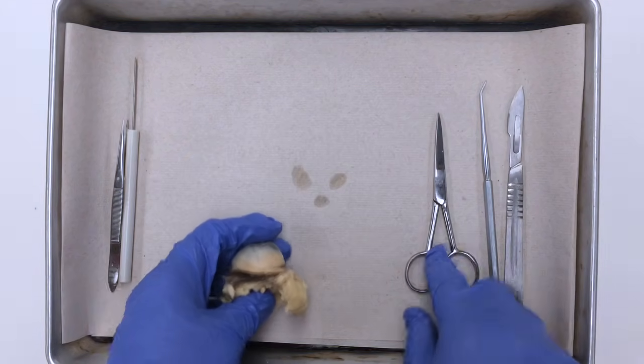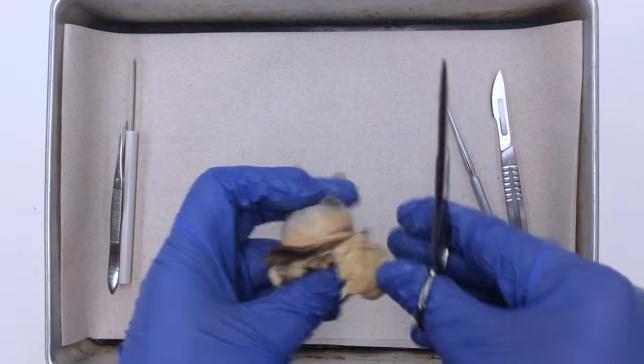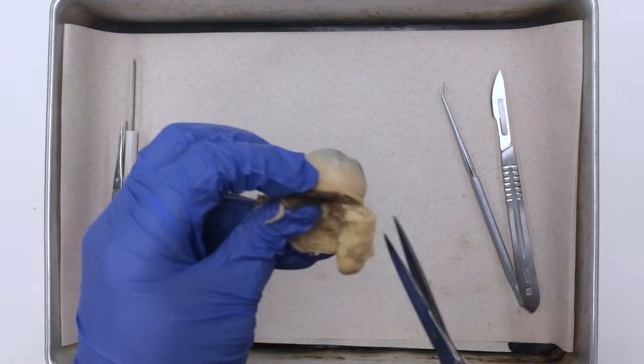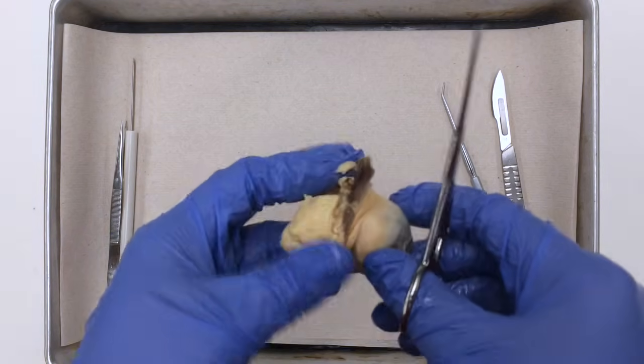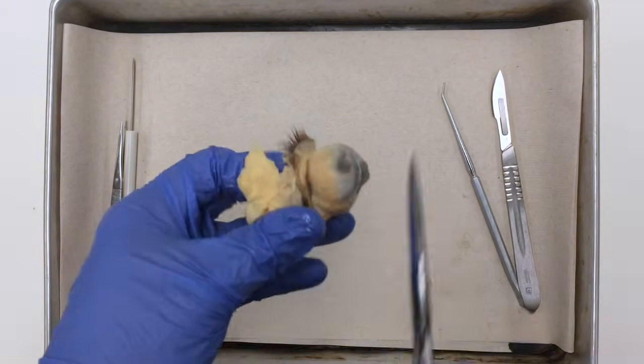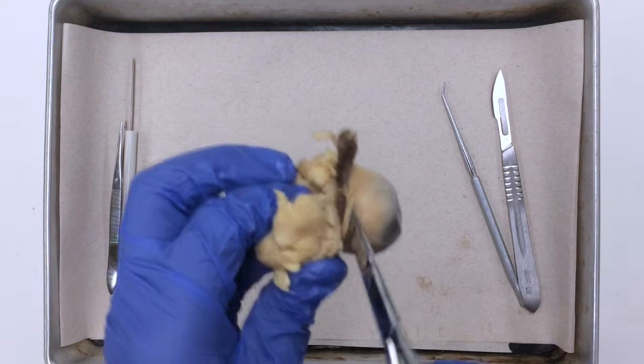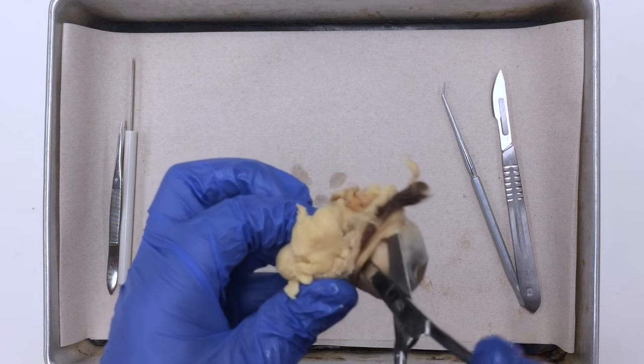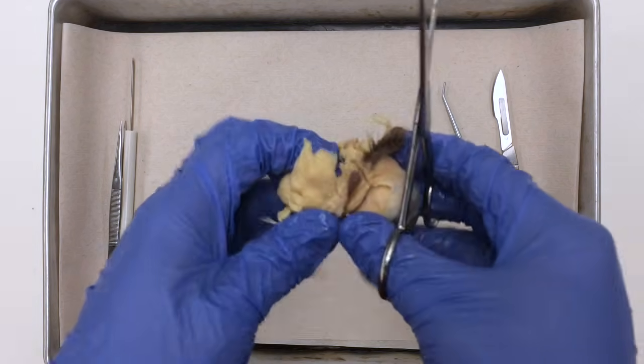Using the pair of scissors from our dissecting kit, the best way to do this is to cut superficially. Once you get into a structure, you can use the tip of the pair of scissors. You're going to insert, wiggle it around, and then open it up to spread the structures away from the eyeball. And then you can cut.